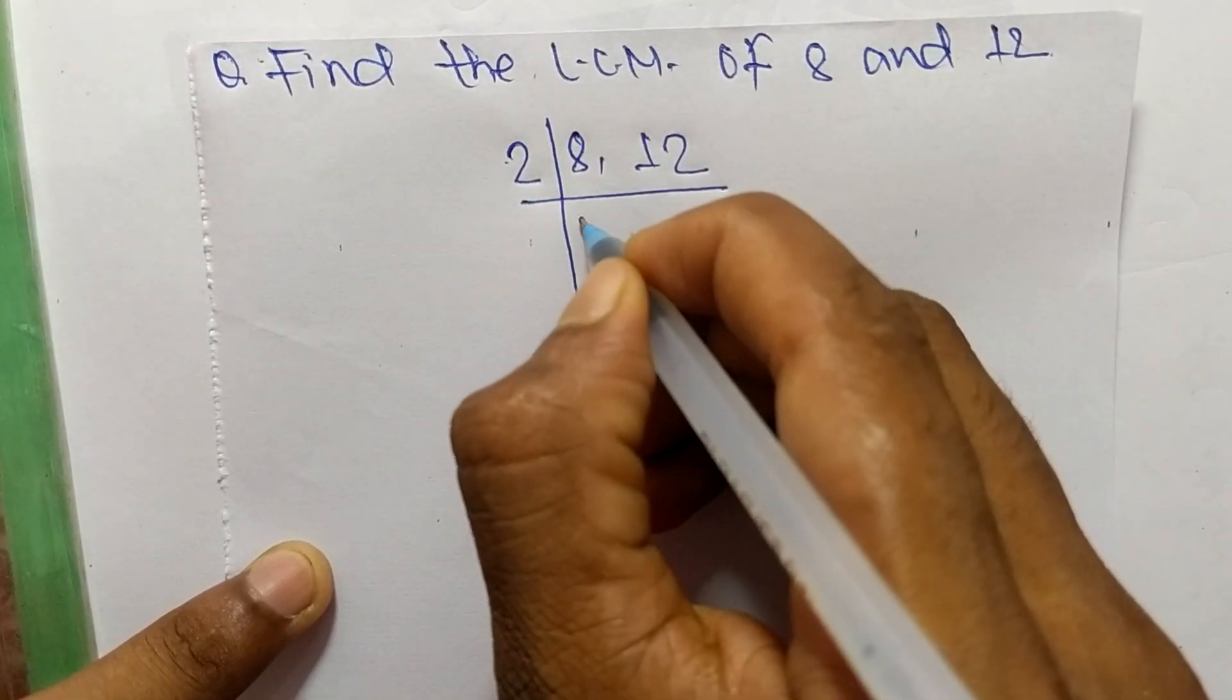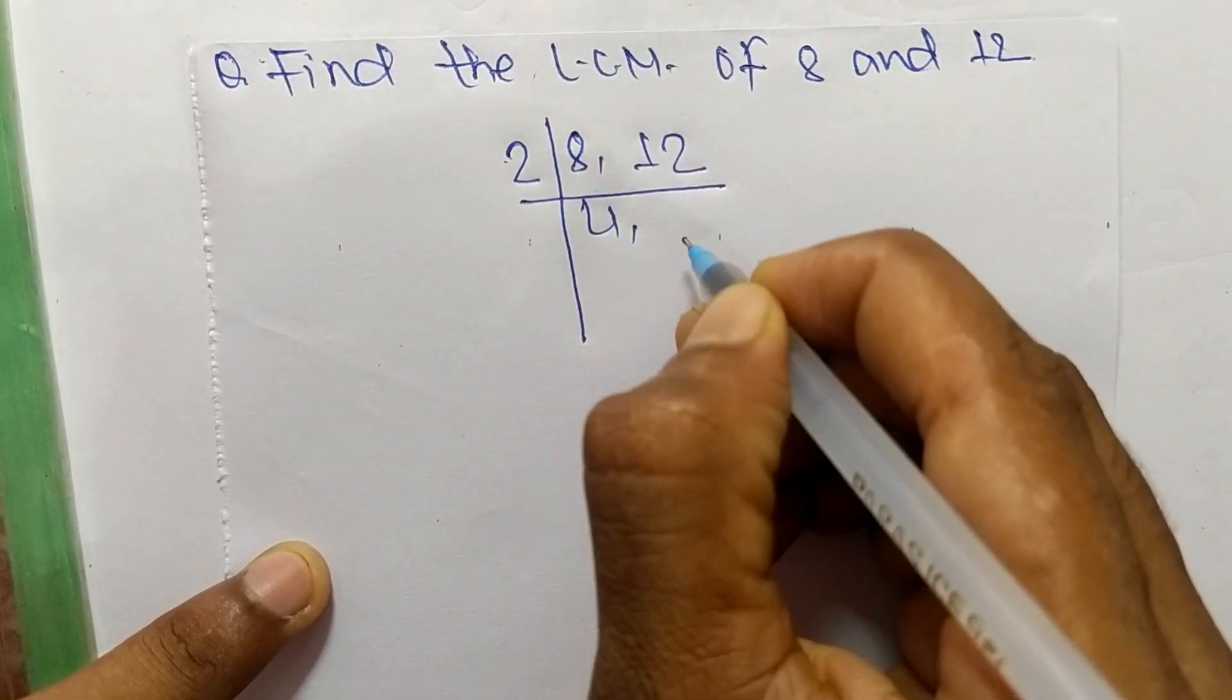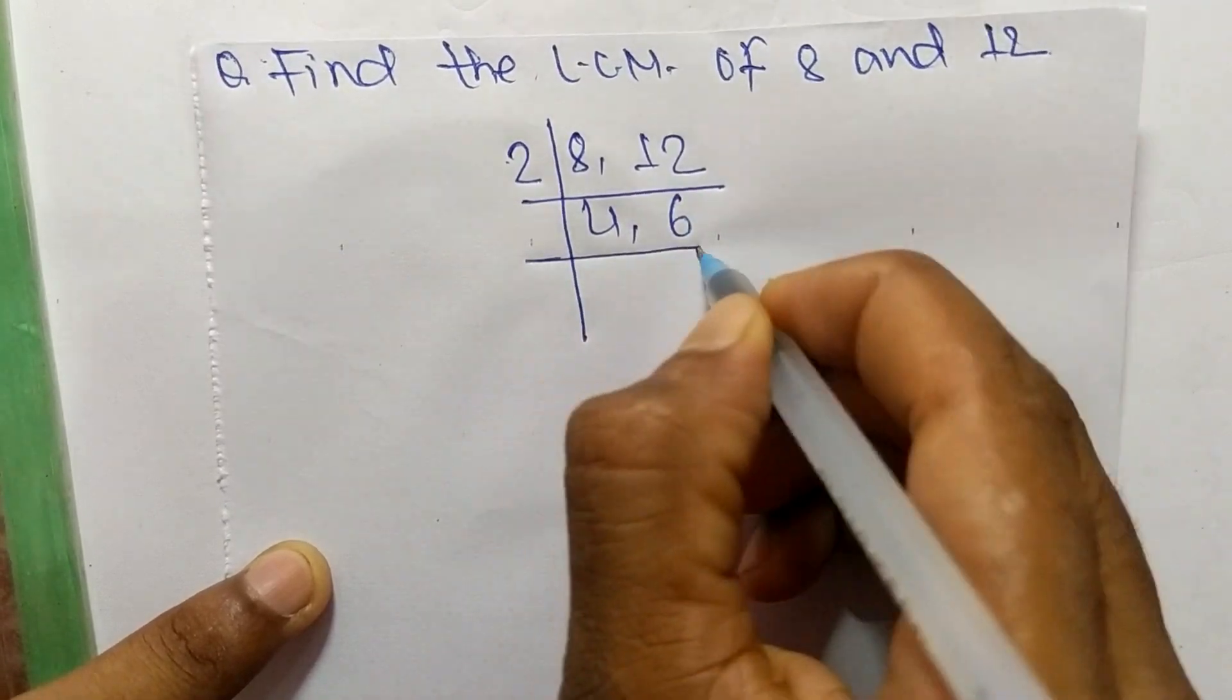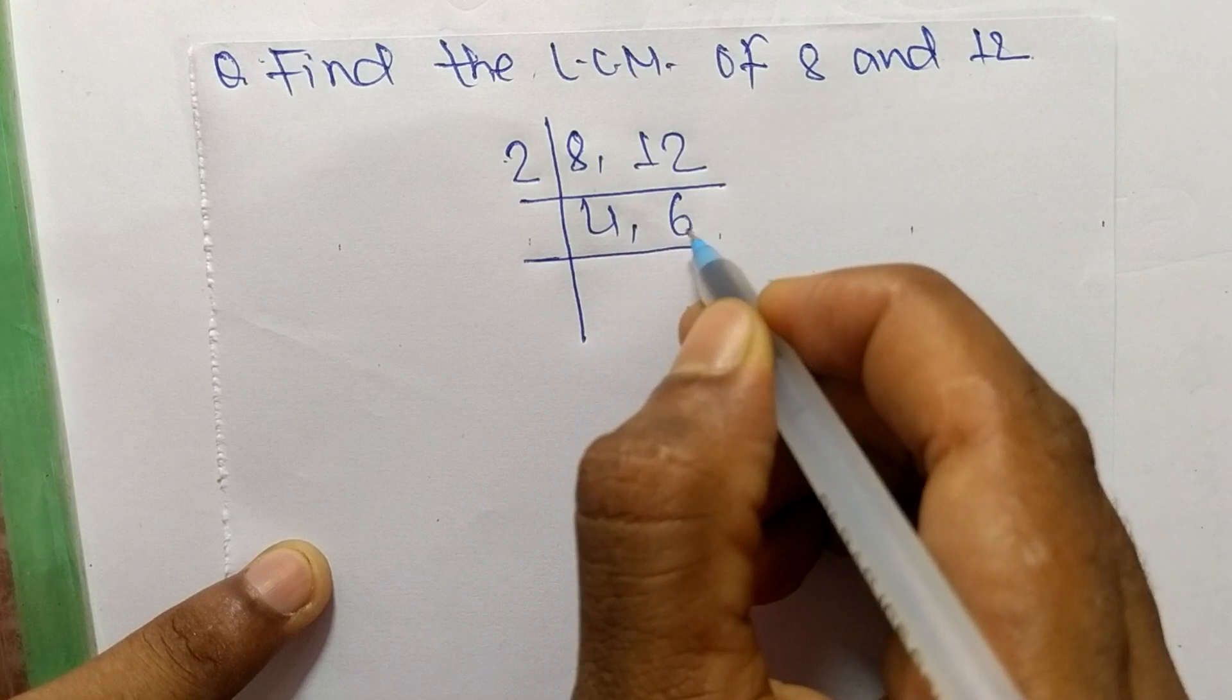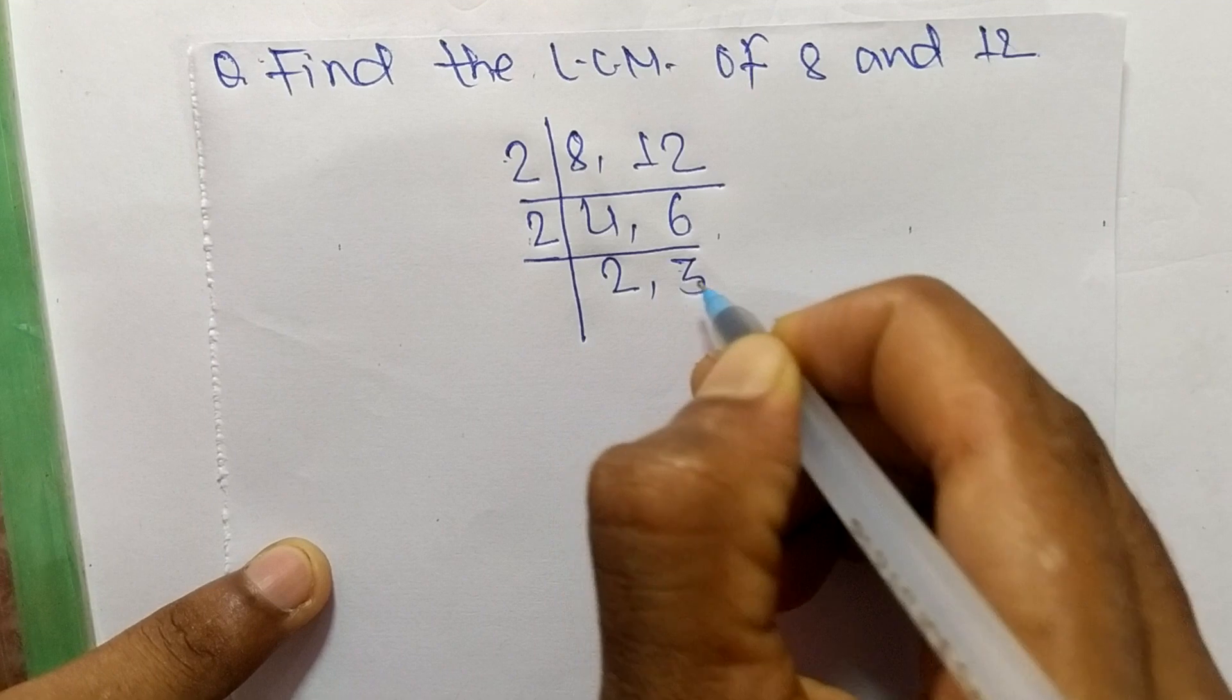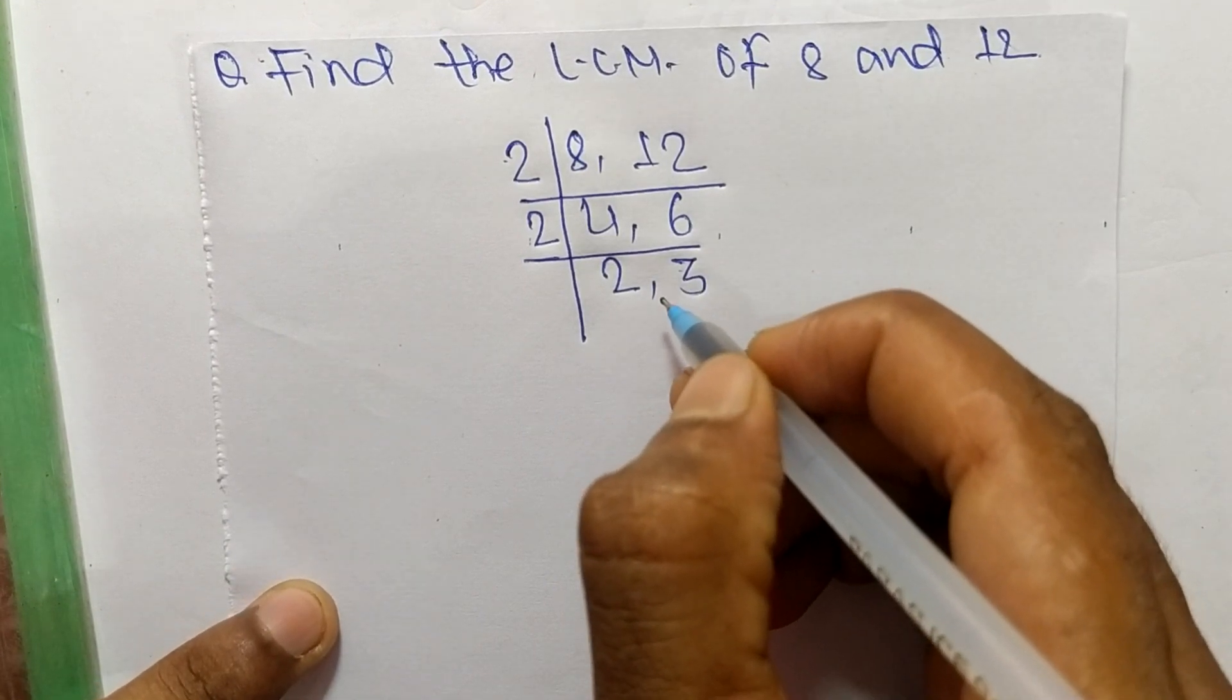So the lowest number is 2. So 2 times 4 means 8, and 2 times 6 means 12. Like this, 2 can again divide both numbers. So 2 times 2 means 4, and 2 times 3 means 6.